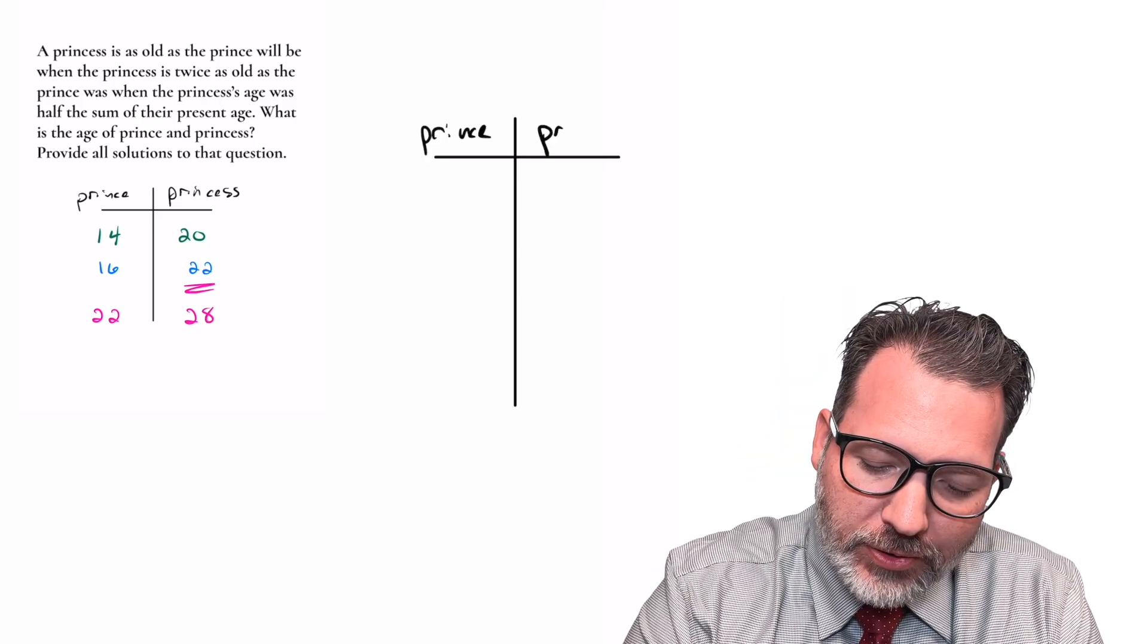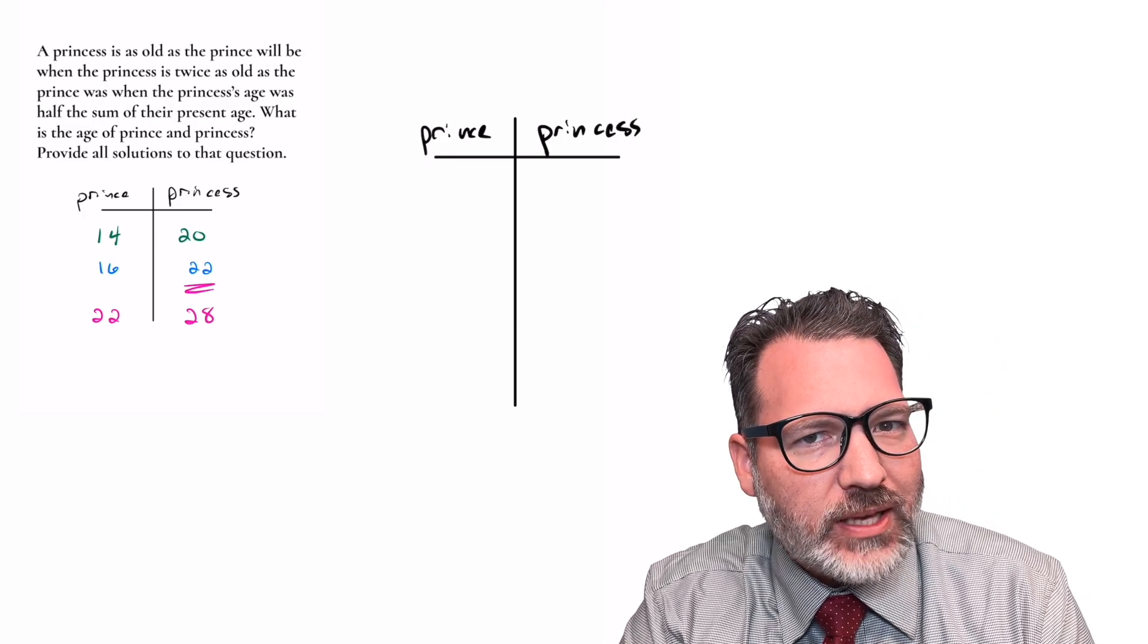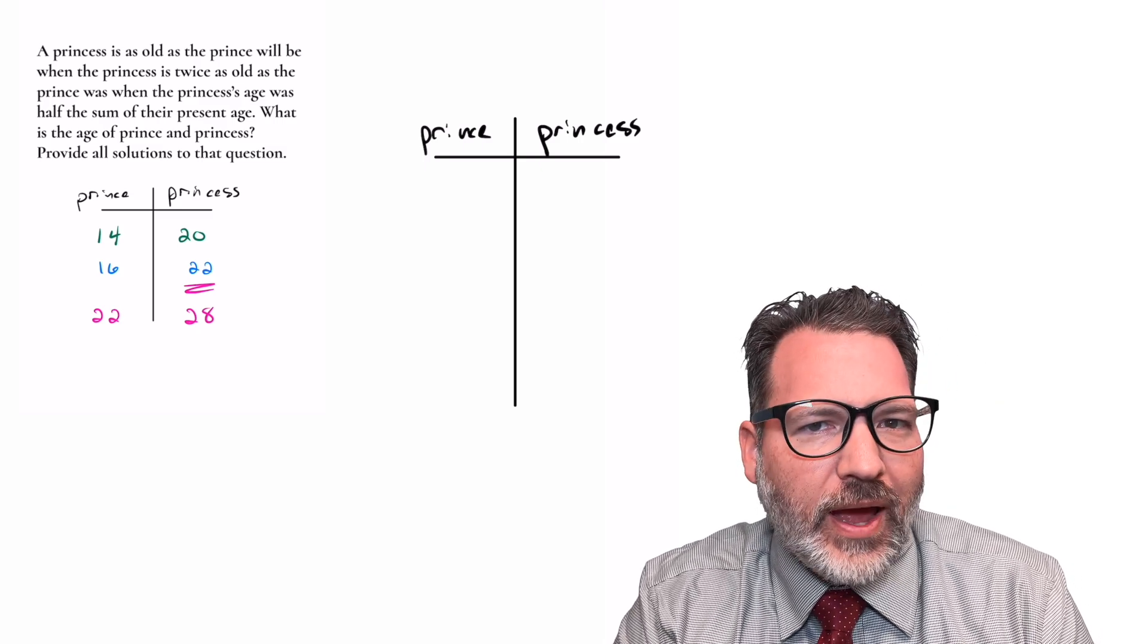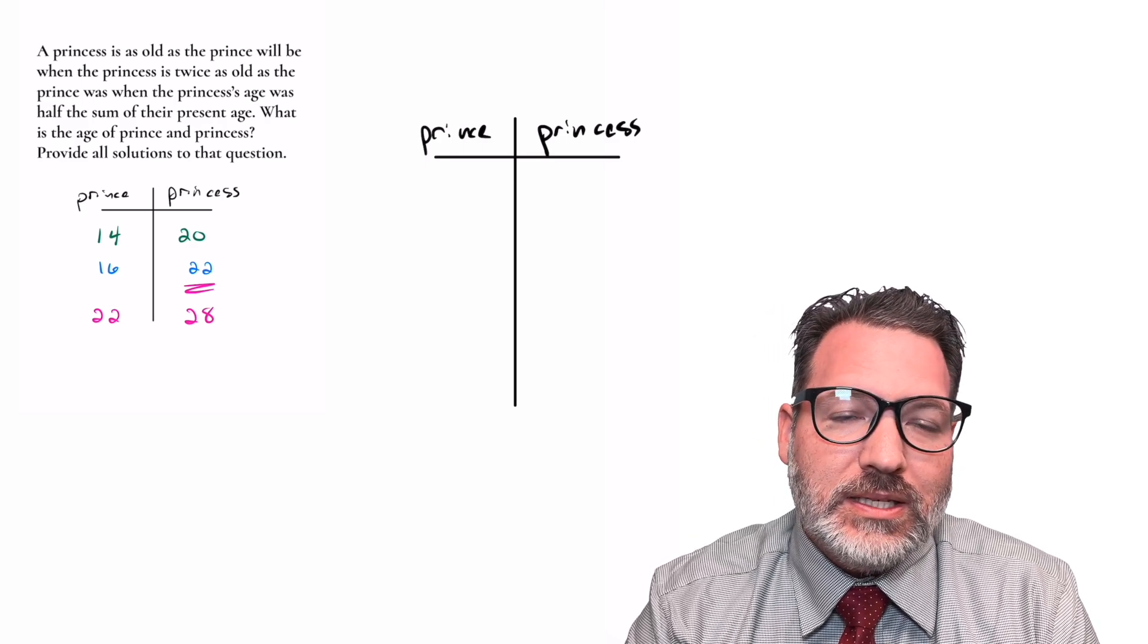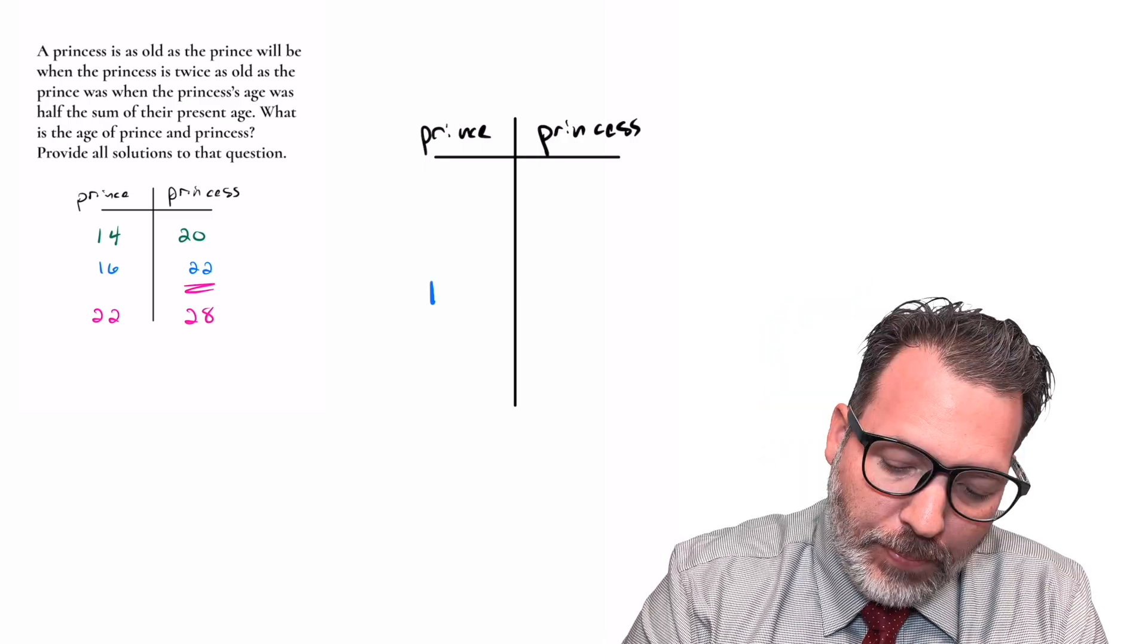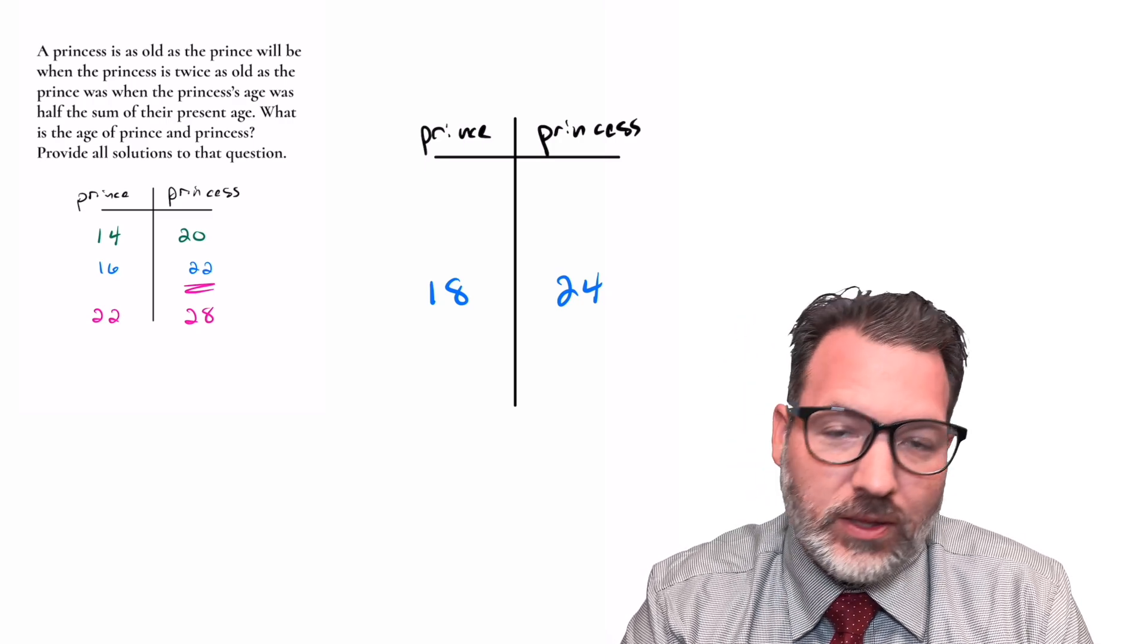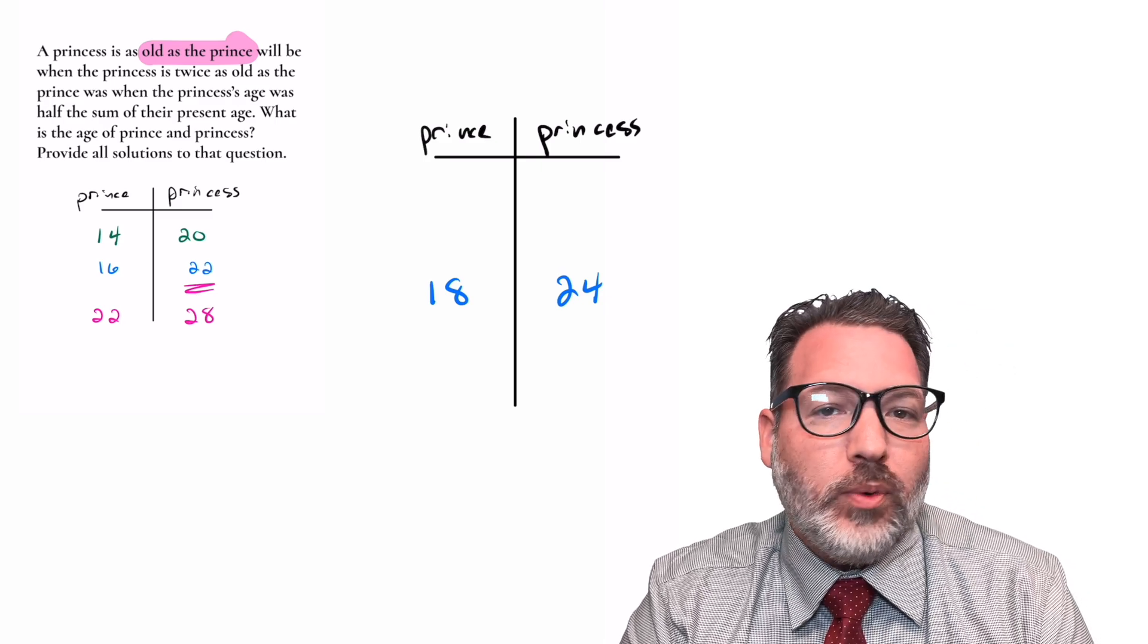Because we were so close the first time, we want to choose a guess that is as much like our previous guess as possible, or if you prefer, only a little bit different from that previous guess. Now obviously both of their ages have to change, so I can't leave any of that the same. What I can leave the same though is the difference between their ages. I'm going to keep them six years apart. But let's make the prince a little older and see what happens. If the prince is 18 and they're still six years apart, then the princess will be 24. And now, once again, I'm going to go back through the question.